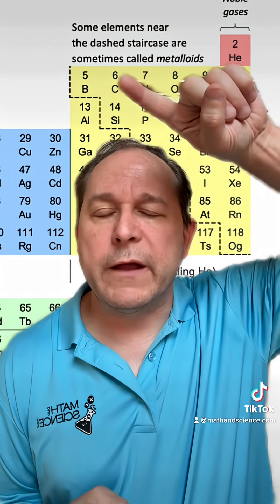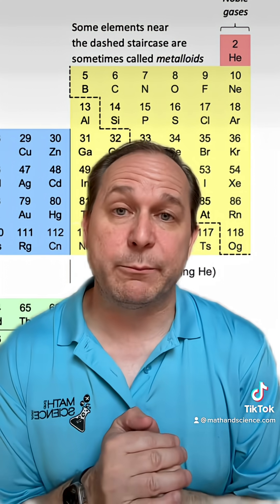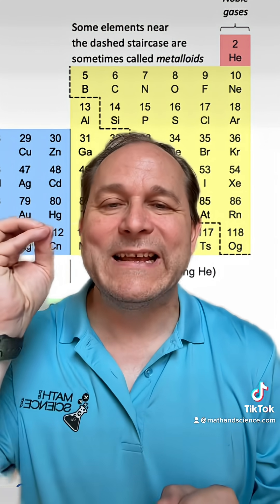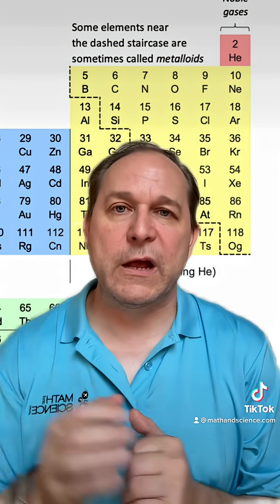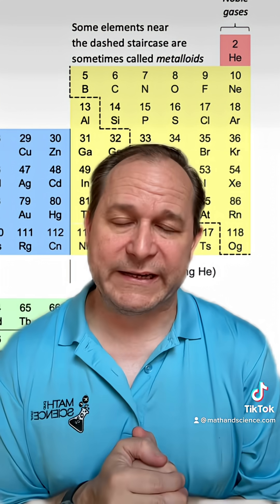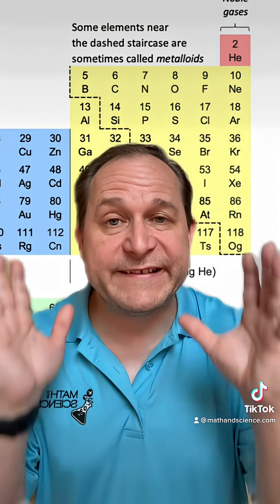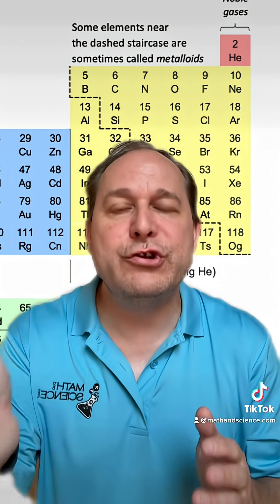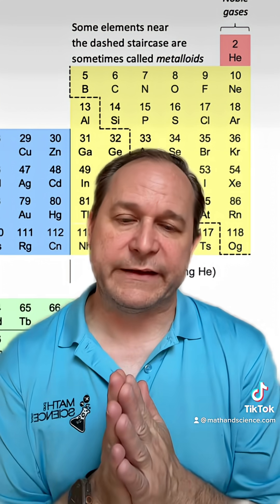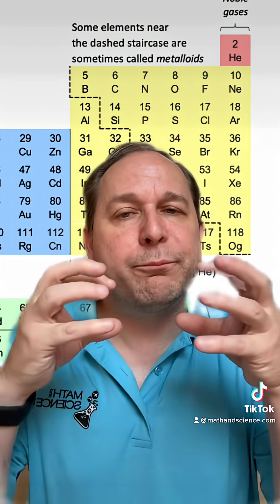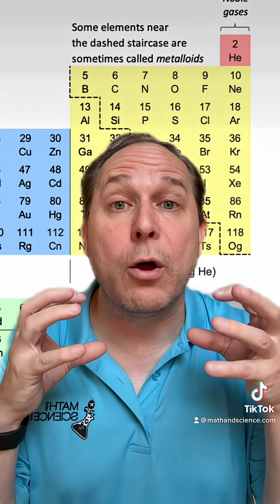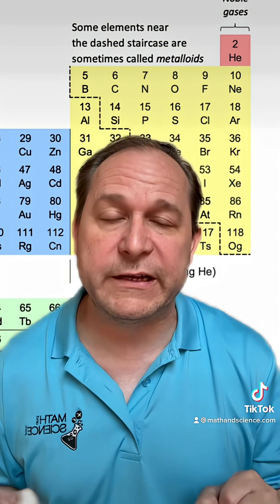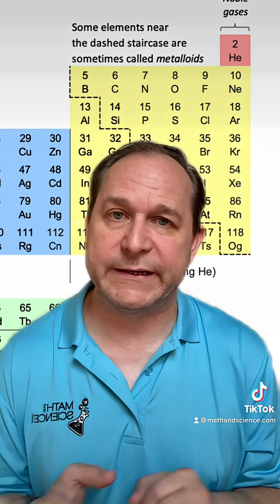On the periodic table, carbon is element number six. That means there are six protons in the nucleus. There are also, typically for the stable form of carbon, six neutrons in the nucleus. Remember, these protons are all positively charged and they all want to repel each other in the nucleus.